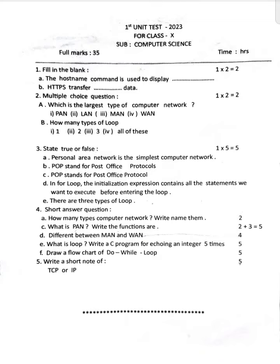Options: LAN, MAN, and WAN. Question B — how many types of loops are there? Options: 1, 2, 3, or all of these. Section 3: True or False. Statement — Personal Area Network is the smallest computer network. True or False? POP stands for Post Office Protocol. True or False?